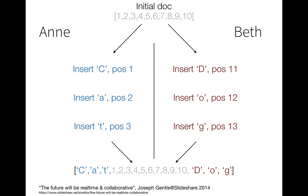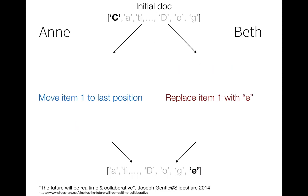If Anne says 'I want to move item one to the last position' and Beth says 'I want to replace item one with E', when we preserve this we say Beth now wants to replace the last item with E. It's exactly the same principle: look at the version an operation is applied to, and if it's not the current version, transform that incoming operation.